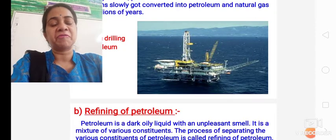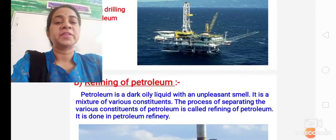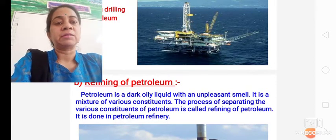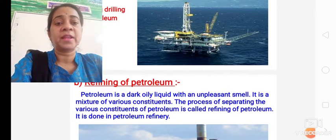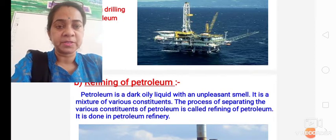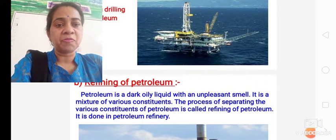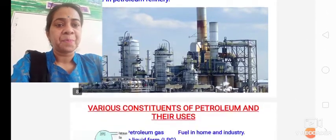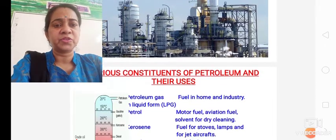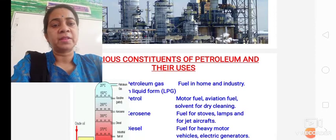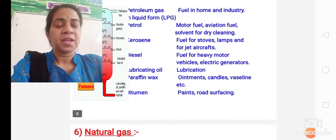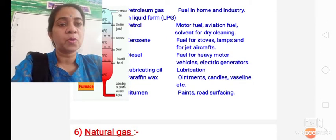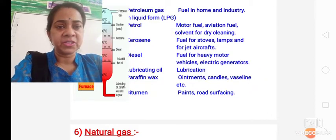Then we studied about refining of petroleum. You have to write what is refining of petroleum. Petroleum is made up of various constituents, so we need to separate all those constituents so that they can be used for various purposes. You can make a diagram of the various constituents of petroleum and their uses. A table is also there in the book — you can refer to your book or just see from the presentation itself.